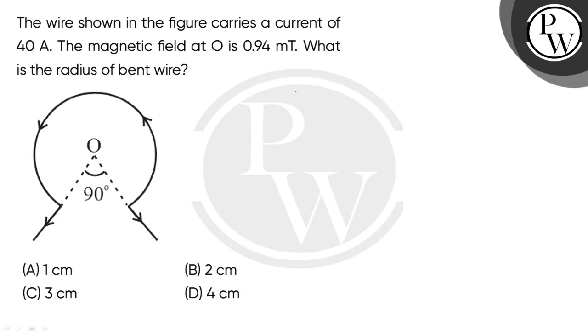Hello, let's get the question. The wire shown in the figure carries a current of 40 amperes. The magnetic field at O is 0.94 millitesla. What is the radius of the bent wire?